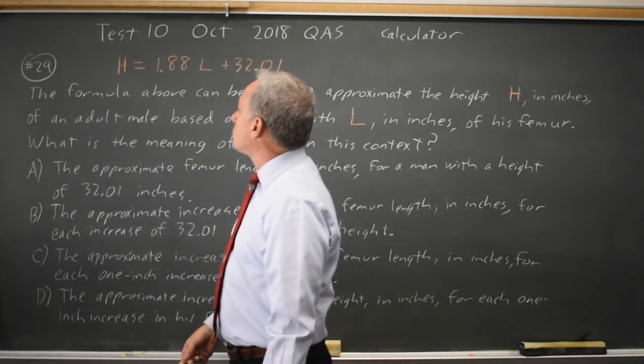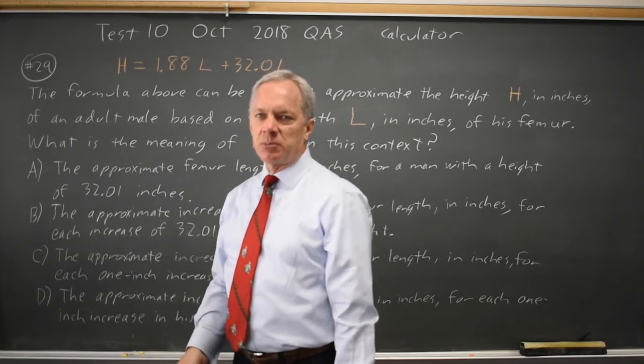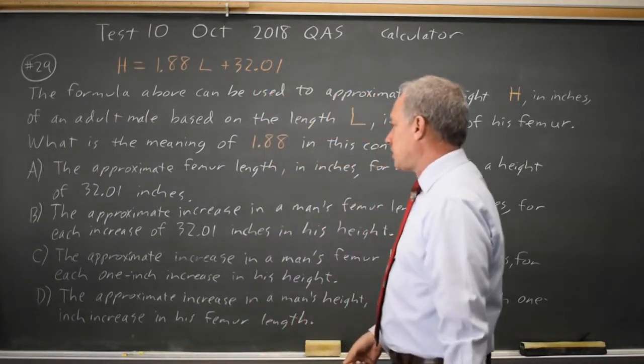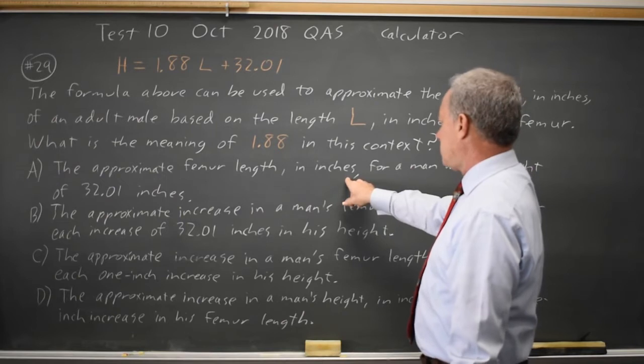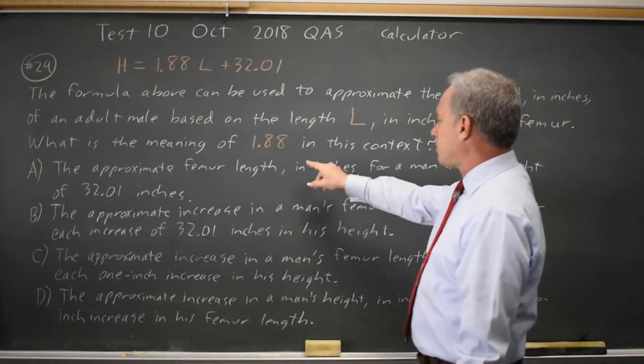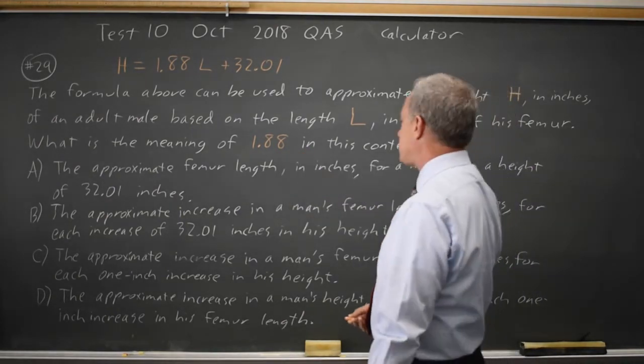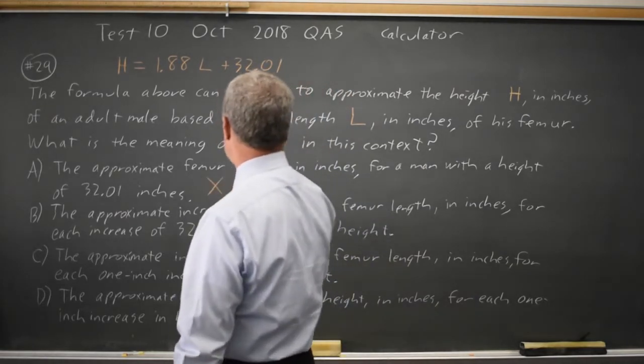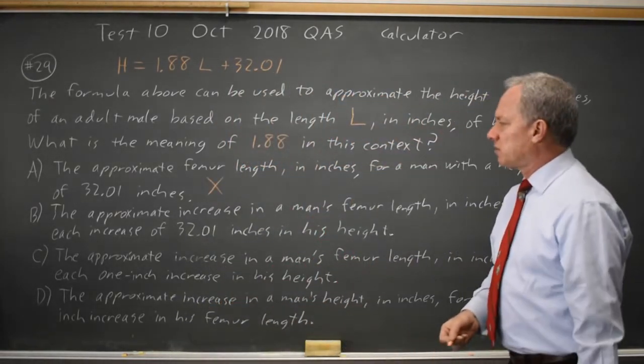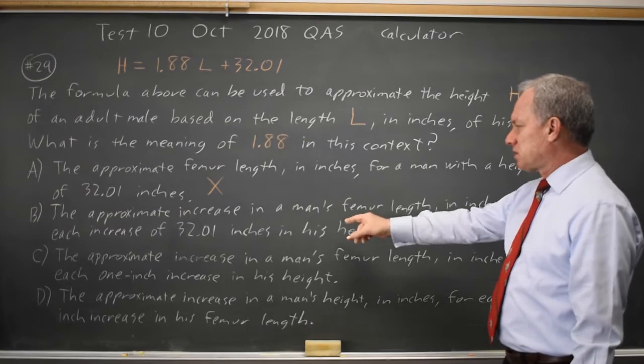So 1.88 is how much H goes up when L increases by 1, and that is not choice A. Choice A of femur of length 1.88 inches does not make sense in general or in the context of the problem.